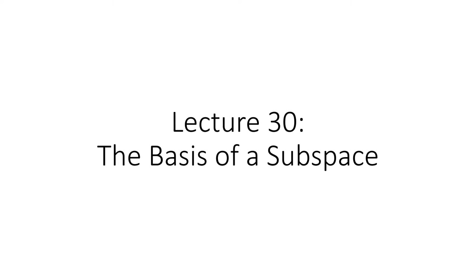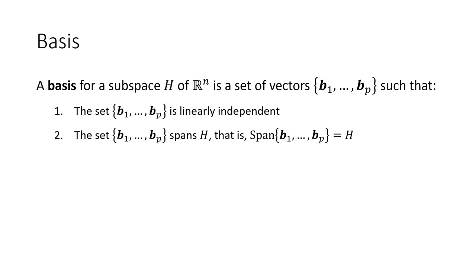In this lecture I'll be talking about the basis of a subspace. A basis of a subspace H — remember this means that H is a subset of Rn which is closed under addition, closed under scalar multiplication, and contains the zero vector — so we have a set of vectors from that set that have two properties.